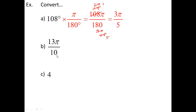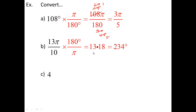Next: 13π/10 — no degree symbol, so this is a radian. Convert to degrees by multiplying by 180/π. The π's cancel, the zeros cancel leaving 13 times 18. Typing in the calculator: 13 times 18 is 234 degrees. So 13π/10 radians is equivalent to 234 degrees.